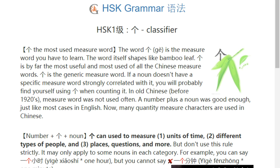The structure for 个 as a measure word is: number plus 个 plus a noun. 个 can be used to measure units of time, different types of people, places, questions, and more. But you should not apply this rule too generally.